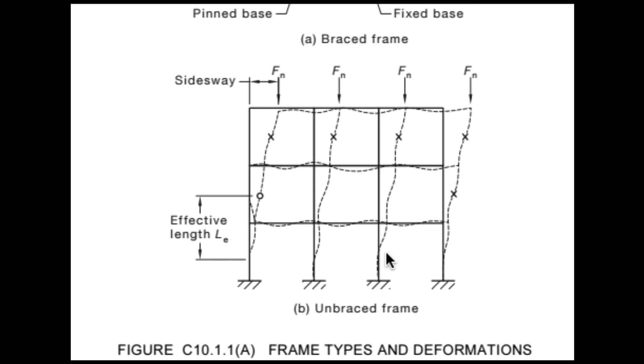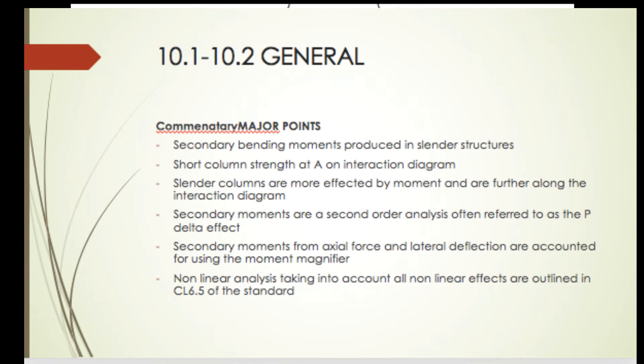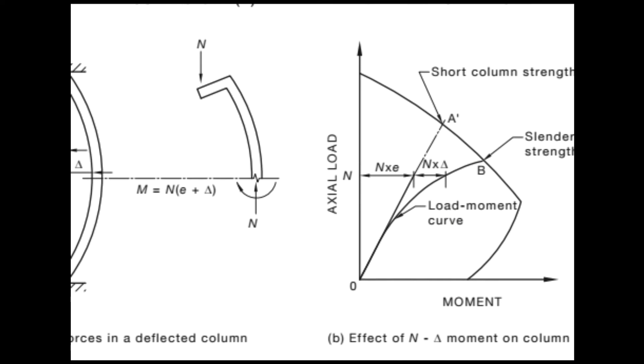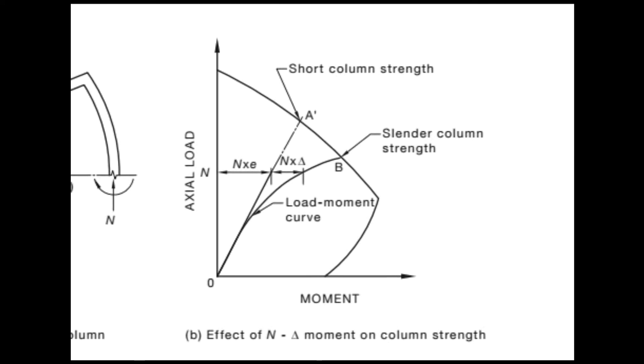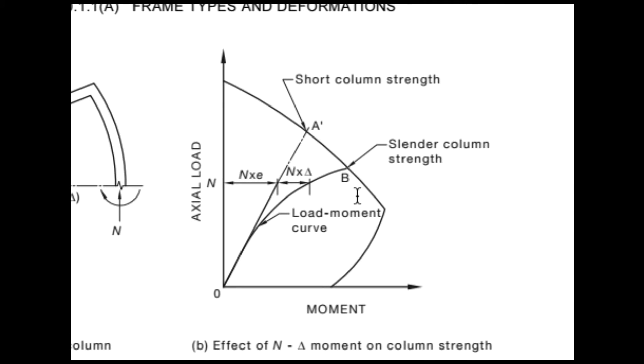A short column is further to point A on the interaction diagram. So looking at here, and we're going to get into the interaction diagram a bit later, but we have the shorter column further up the diagram, therefore being able to take a larger, greater actual load, and slender columns are further along the diagram here, taking less of a load.